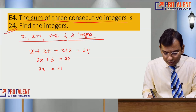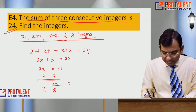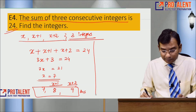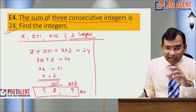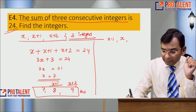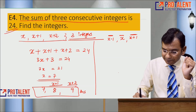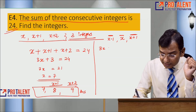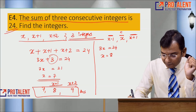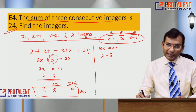From 3X plus 3 equals 24, we get 3X equals 21, so X equals 7. The three integers are 7, 8, and 9. There is another way: take the middle term as X, so the three consecutive integers are X minus 1, X, and X plus 1. Adding them: 3X equals 24, so X equals 8. The integers are again 7, 8, 9 - same answer, but taking the middle term as X eliminates the constant term.